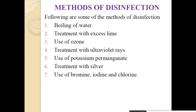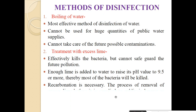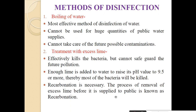Now, methods of disinfection. There are various methods used for the disinfection of water: first, boiling of water; second, treatment with excess lime; third, use of ozone; fourth, treatment with ultraviolet rays; fifth, use of potassium permanganate; sixth, treatment with silver; and lastly, use of bromine, iodine, and fluorine. These are the various methods used for disinfection purpose. Later, we will discuss all these methods one by one in detail.